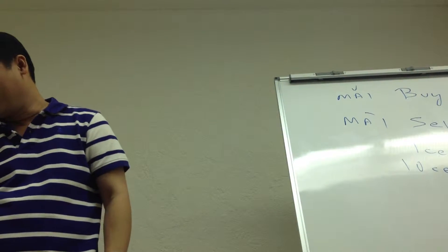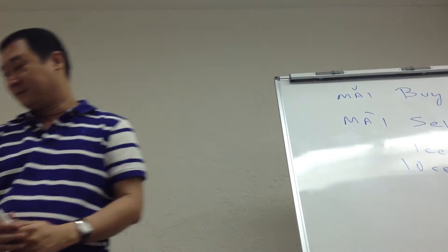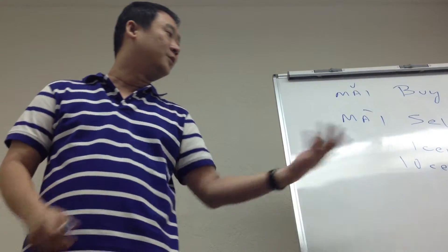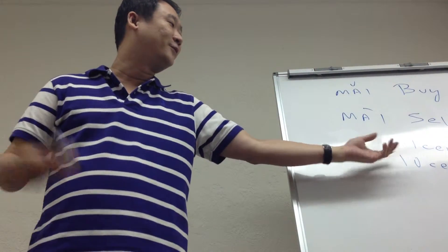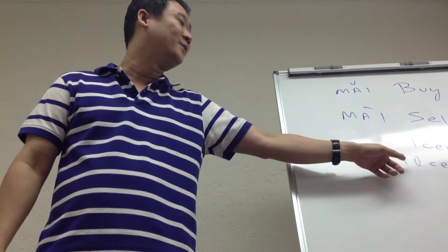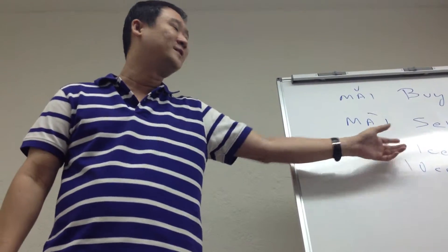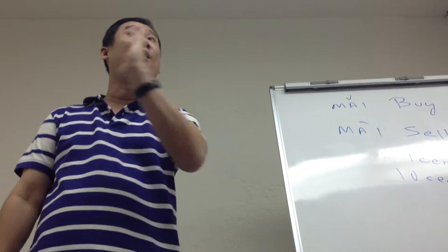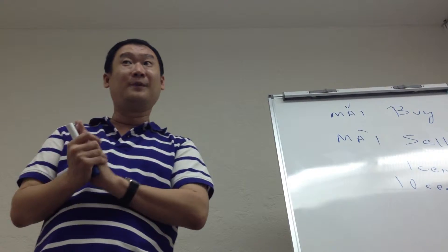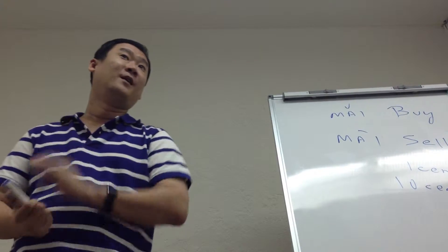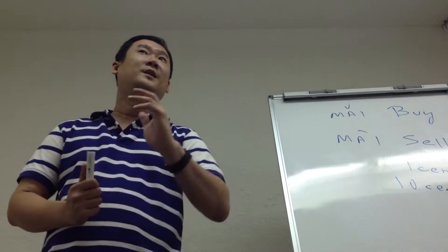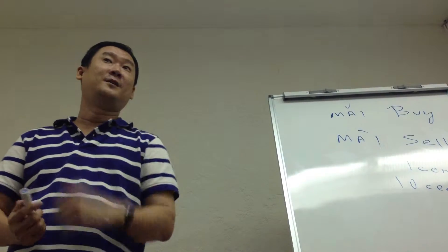Yi mao is the ten cent. So you can say 15 cents. So 35 cents — okay. 15 cents will be yi mao bang. You can say yi mao wu fen, no problem — yi mao wu fen. But you can also say yi mao bang. Okay, now let's say chicken rice, 3.50.